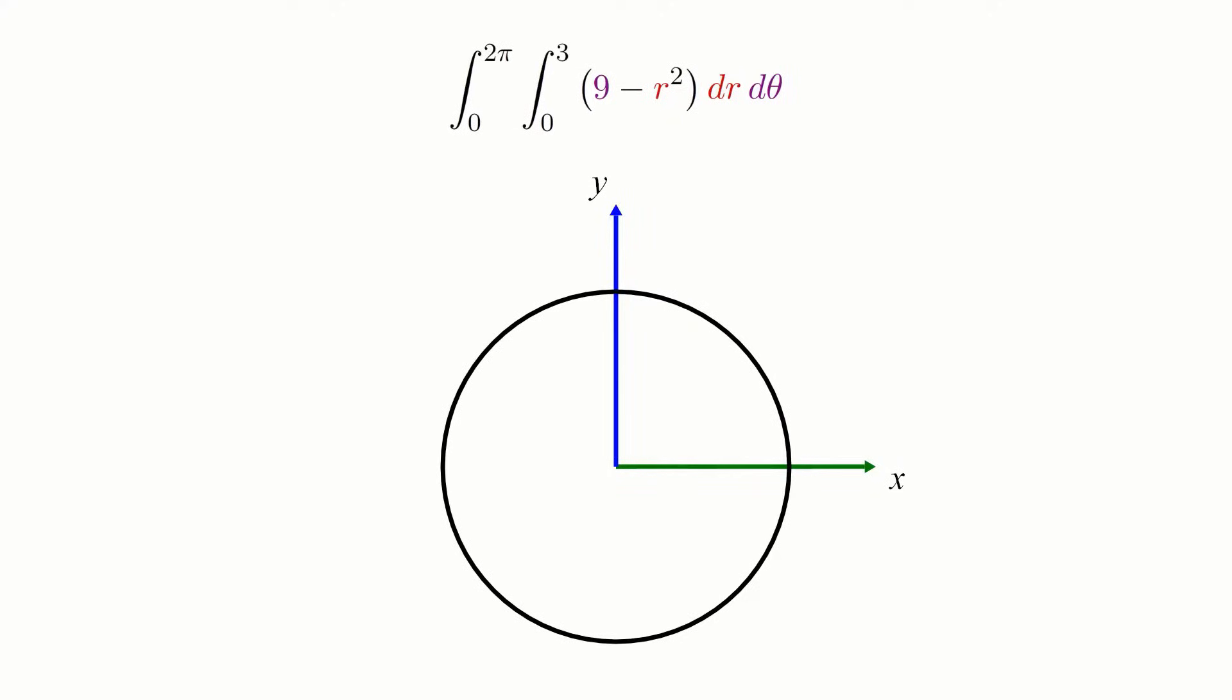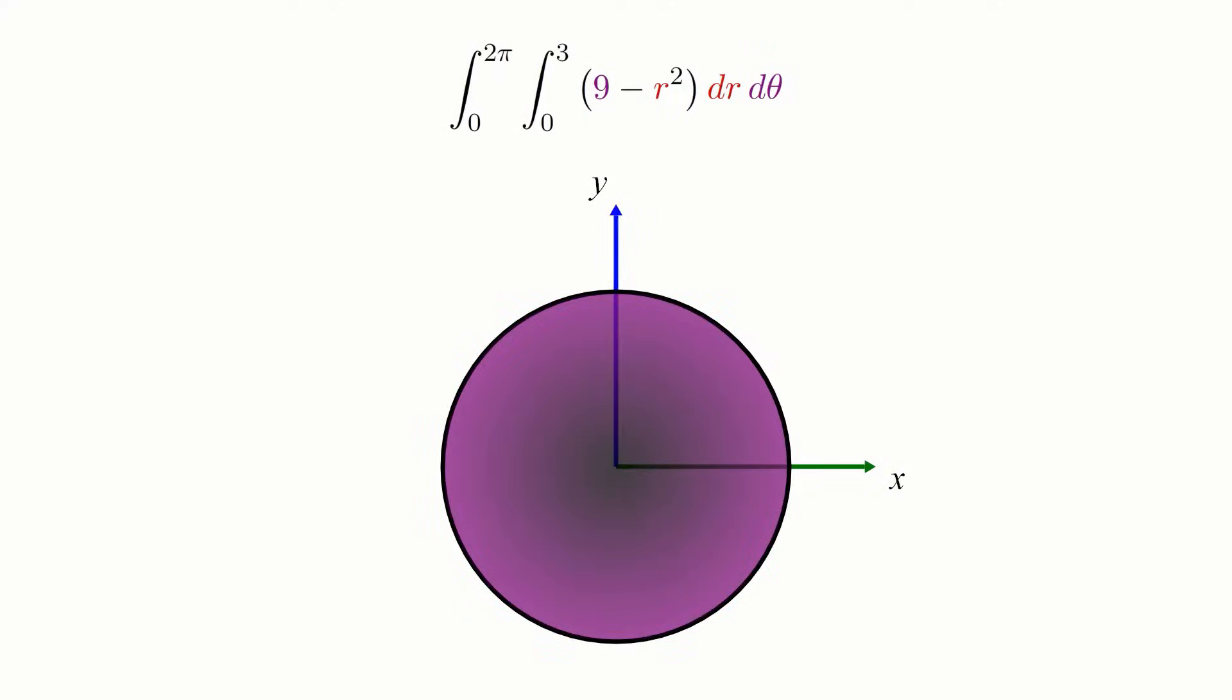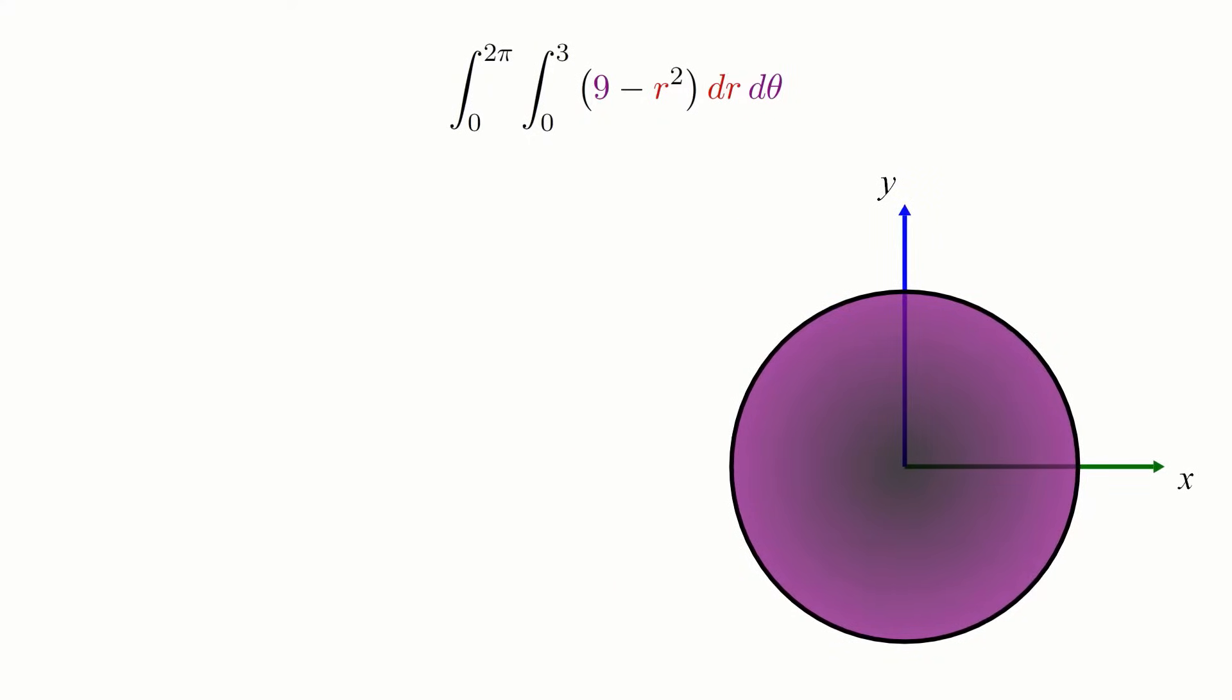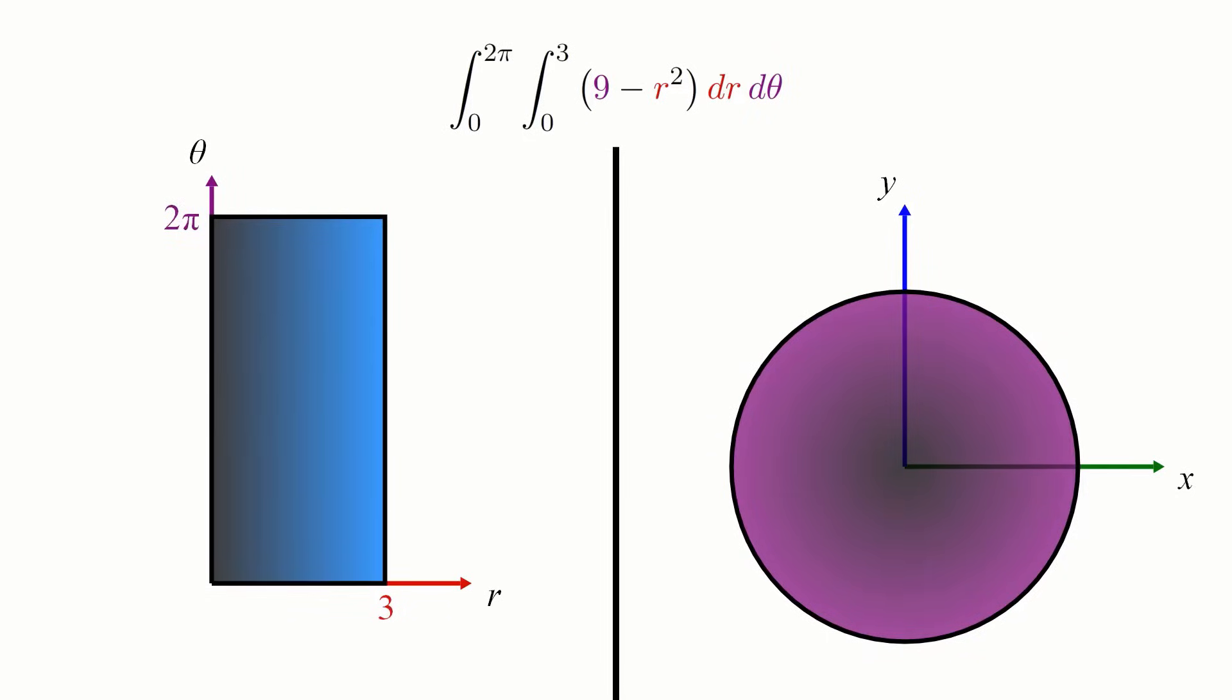Remember that integrals don't care about what the variables inside them are supposed to represent. They don't know that r and theta are supposed to represent a polar coordinate system, and so to them, integrating r from 0 to 3 and theta from 0 to 2 pi instead of taking place on a disk might as well be happening on a rectangle in a separate plane where the axes are labeled r and theta instead of x and y. The problem here is, measurements of distance and area in this r theta plane where the double integral lives may not correspond to measurements in the xy plane where we are.